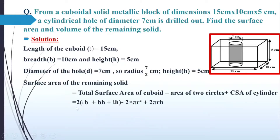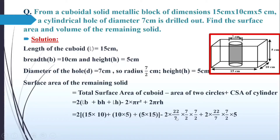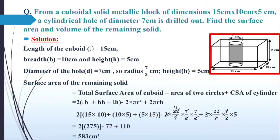Putting in the values — L = 15, B = 10, H = 5, R = 7/2, and height of the hole = 5 cm — I substitute and simplify. The 2s cancel, 7 and 7 cancel, 22 and 2 cancel to give 11, leaving 11 × 7. For the curved surface area term, 2 and 2 cancel, 7 and 7 cancel, leaving 22 × 5 = 110. So I get 2(275) minus 77 plus 110, which is 550 minus 77 plus 110, giving 583 cm² as the surface area of the remaining solid.